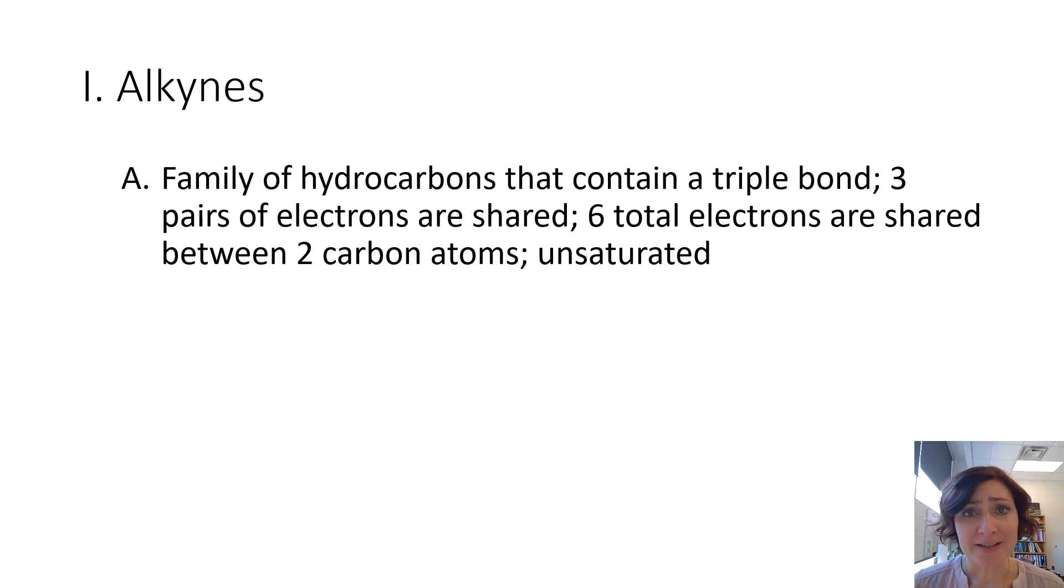Let's start the same place we always start. Alkynes are a family of hydrocarbons that have a triple bond. So that means now instead of having one shared pair of electrons or two like in alkenes, they now have three pairs of shared electrons or six total electrons.